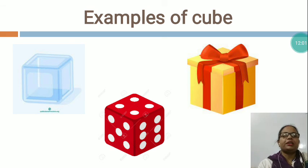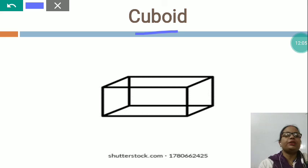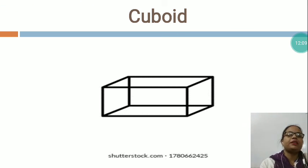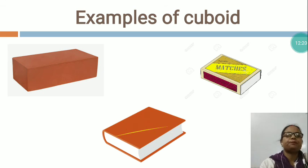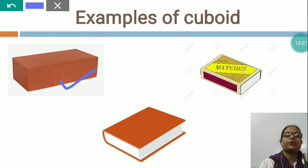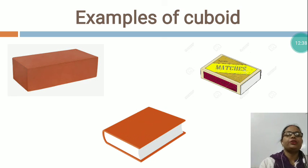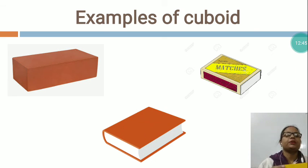Now I would like to teach you another shape. This is CUBOID. In cuboid also there are 6 faces and 12 sides. But all sides are not equal — only the parallel sides are equal. These all are the examples of cuboid: this is a brick — cuboid shape. This is a book — cuboid shape. This is a matchbox — cuboid shape. And you can see in my hand — what is this? This is a duster — cuboid shape. These all are the examples of cuboid. You will study at home all shapes. Thank you.